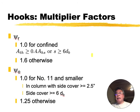I'm going to talk about this R factor, confinement factor, a little more later. So let's skip to sigma O. If you have a number 11 and smaller bar, and it's in a column, so you're hooking into a column, and the side cover is greater or equal to 2.5 inches, it's 1.0. Or if you're hooking into something that's not a column, so maybe like a beam coming into a girder, and the side cover is greater than 6 bar diameters, you can use 1.0 as well. Otherwise, you have to use 1.25.